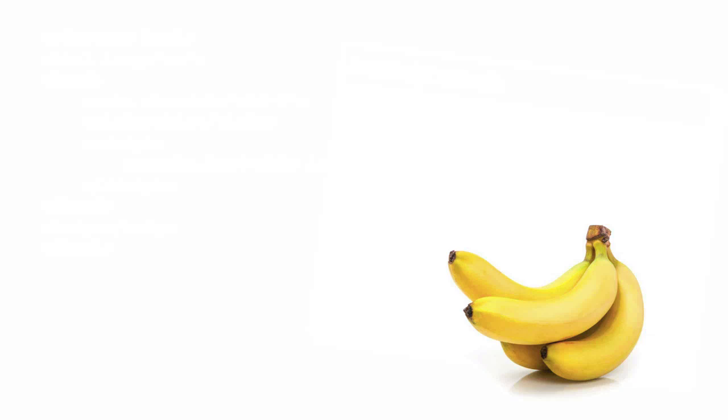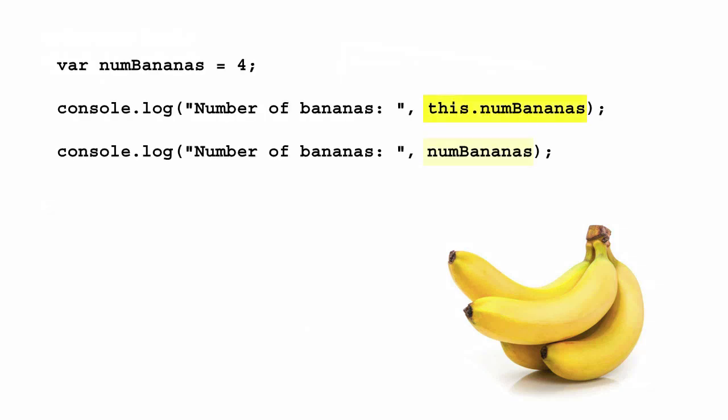One thing to notice about `this` at the global level is that whenever you create a global variable, that global variable gets added as a property to the `window` object. So you can refer to all global variables as properties of the `window` object, but you don't have to — just the name works too, because the `window` object is used by default if it's not specified. So in this example, you can write `this.numBananas` or just `numBananas`, and both work, referring to the same variable.